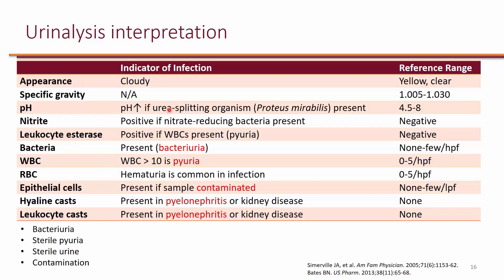The pH is also important. Some organisms such as Proteus mirabilis are capable of splitting urea, which will increase pH. Occasionally you will see the pH higher than the normal range, and that helps you suspect Proteus mirabilis when choosing antimicrobial agents.